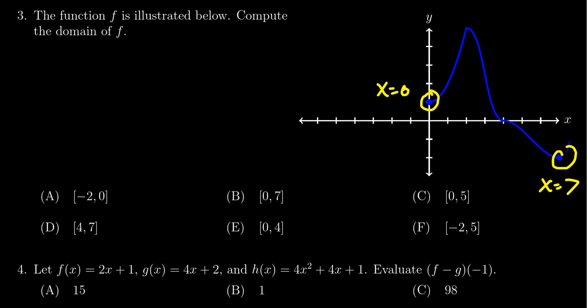So zero and seven will be included. We should use brackets to indicate that. So the correct domain would be zero to seven, where, again, seven and zero are both included inside the domain. Hence, the correct answer is B.